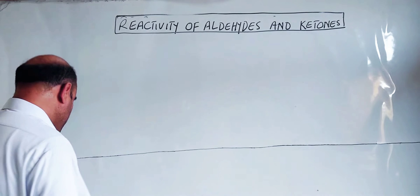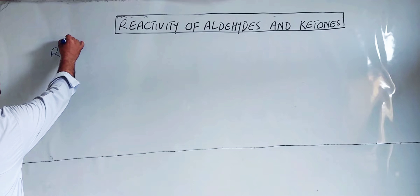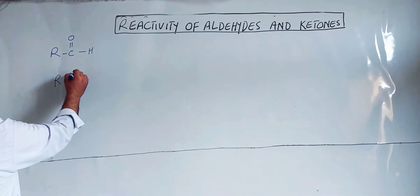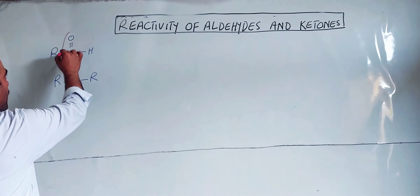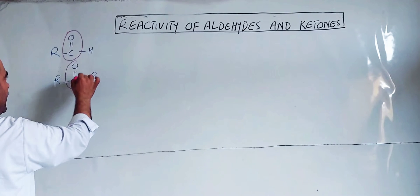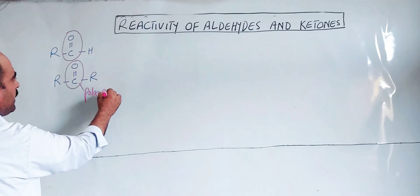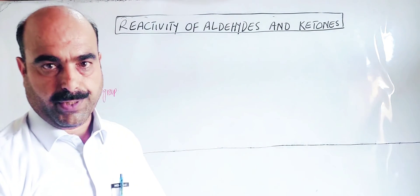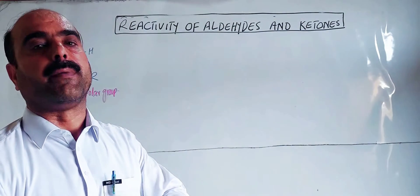Aldehydes have the general formula R-C-O-H, and ketones have the general formula R-C-O-R. In both, the carbonyl group is present, and this carbonyl group is a polar group. Because of this polar group, both aldehydes and ketones show reactivity. We will discuss their relative reactivity — which shows more reactivity and which shows less.